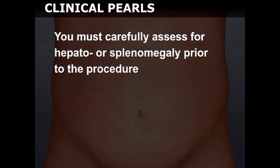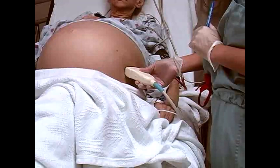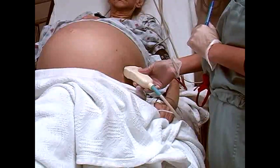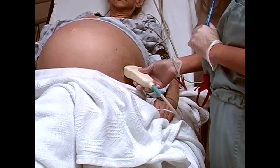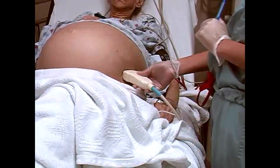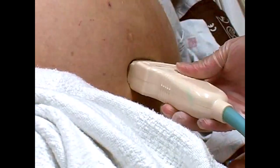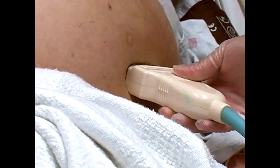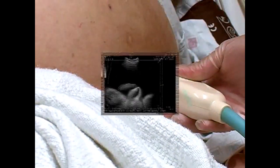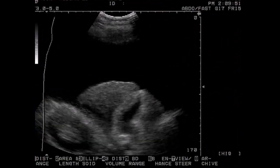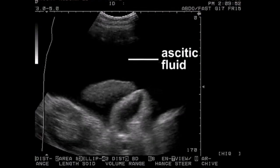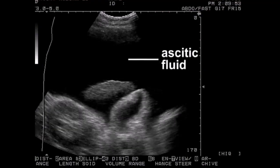If available, use bedside ultrasound to confirm that the needle entry site is overlying fluid and is free of intra-abdominal structures. Note that ascitic fluid is anechoic and appears black on ultrasound.